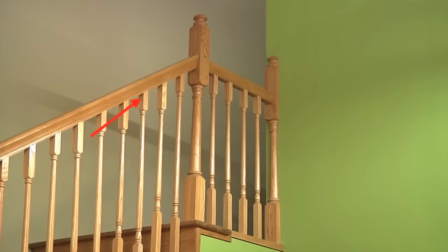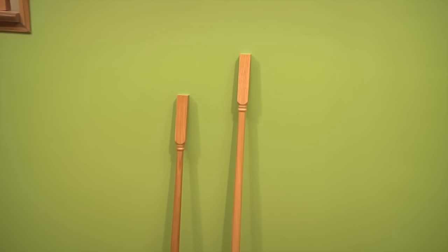You'll need a newel post at the bottom, another newel post for each turn or landing and a half newel where it meets the wall. You'll need one short baluster for the front of the step and one long baluster for the rear of the step.